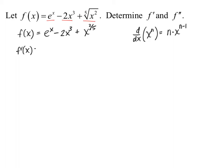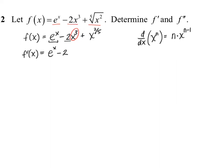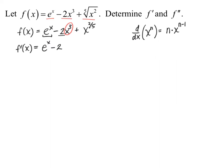For f prime of x: our first term, which is e to the x, has a derivative of simply e to the x. Our second term has a coefficient, so we keep that coefficient as a constant multiple and multiply it by the derivative of x to the third power. Using the power rule, the exponent three comes in front and then we subtract one from the exponent, giving us three x squared.